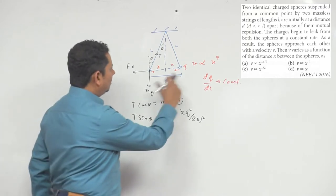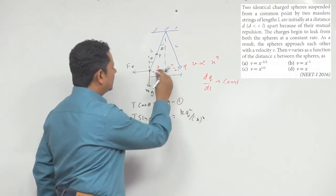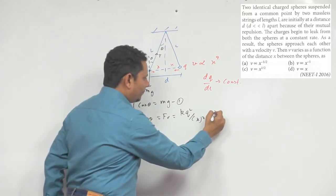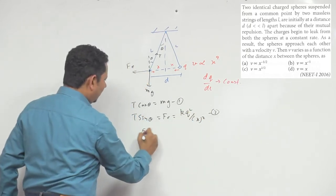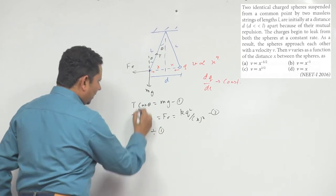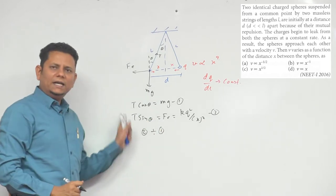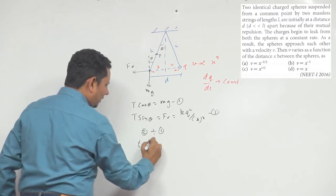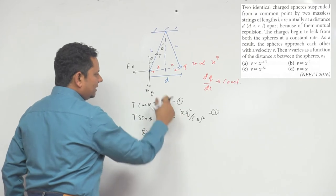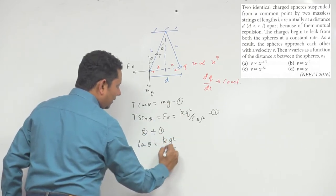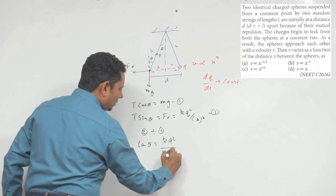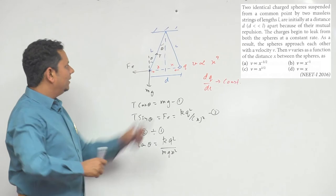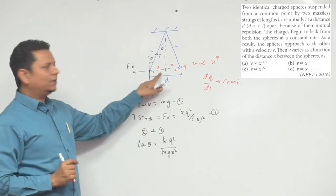This divided by mg x square - this is your tan theta value. Now you know that the angle and x value is very small, so this angle is very small.